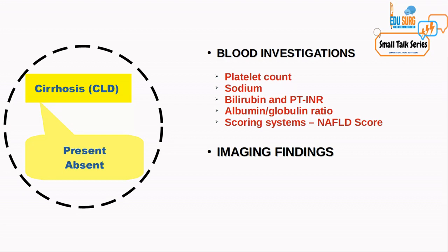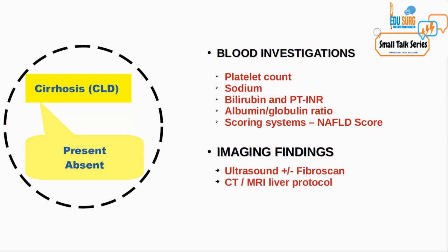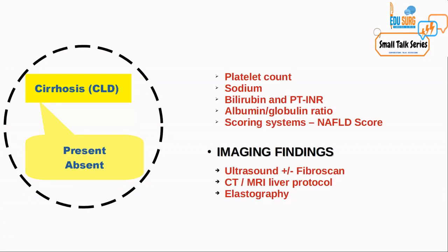After blood investigations, there are imaging findings which can also give you an idea. These include the coarse echotexture of the liver, Doppler on ultrasound, fibroscan, CT, MRI, and elastography. These are all the investigations you can do to identify if your patient has cirrhosis.